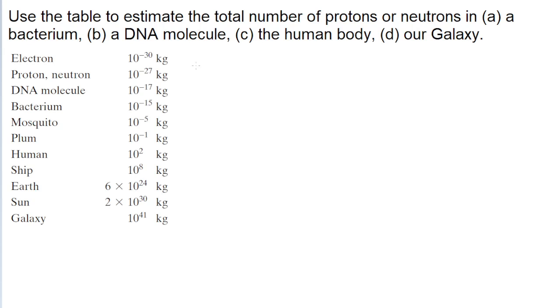According to the table, a bacterium has a mass of about 10 to the power of negative 15 kilograms. So to find out how many protons or neutrons are in a bacterium, we take the mass of a proton or a neutron and divide that into the mass of the bacterium.